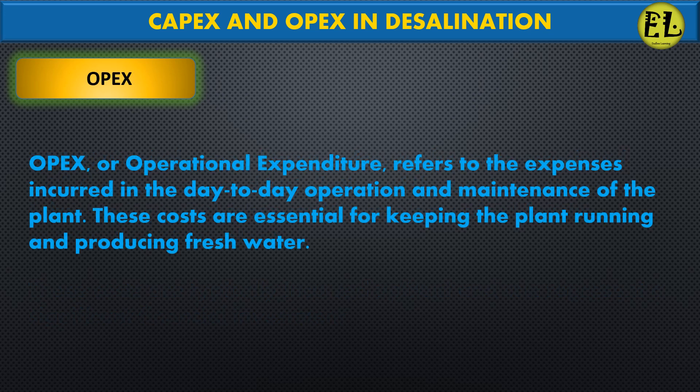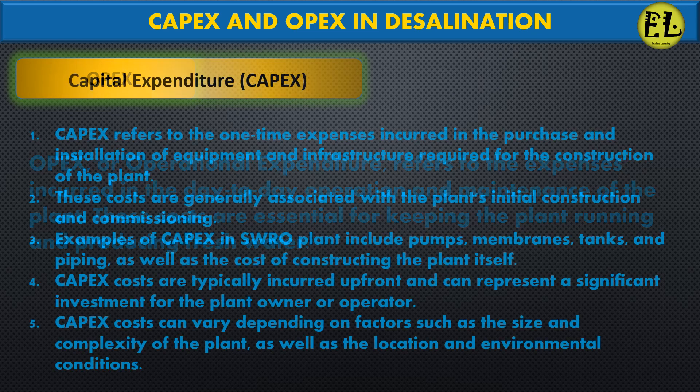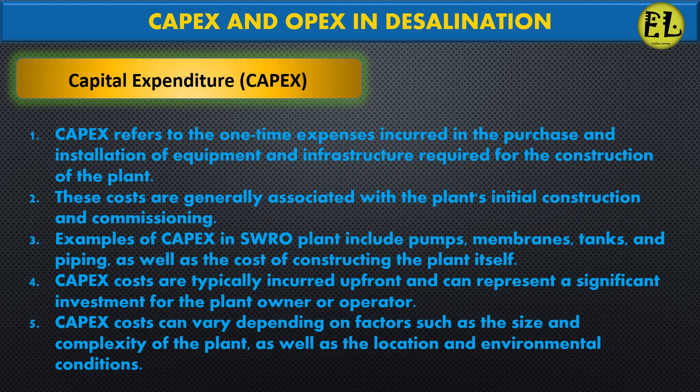Opex, or operational expenditure, refers to the expenses incurred in the day-to-day operation and maintenance of the plant. These costs are essential for keeping the plant running and producing fresh water. Capex refers to the one-time expenses incurred in the purchase and installation of equipment and infrastructure required for the construction of the plant, generally associated with initial construction and commissioning.